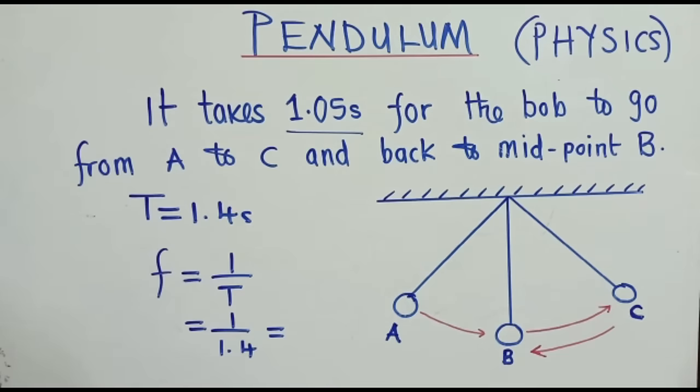So this will just be 1 over 1.4. When we punch on our calculator, 1 divided by 1.4, we are getting 0.714. So you must indicate the units here. It's either you put inverse seconds or seconds to the power negative one, or you just put the hertz like this. So these are units. You can either use this or this. And this is our solution.